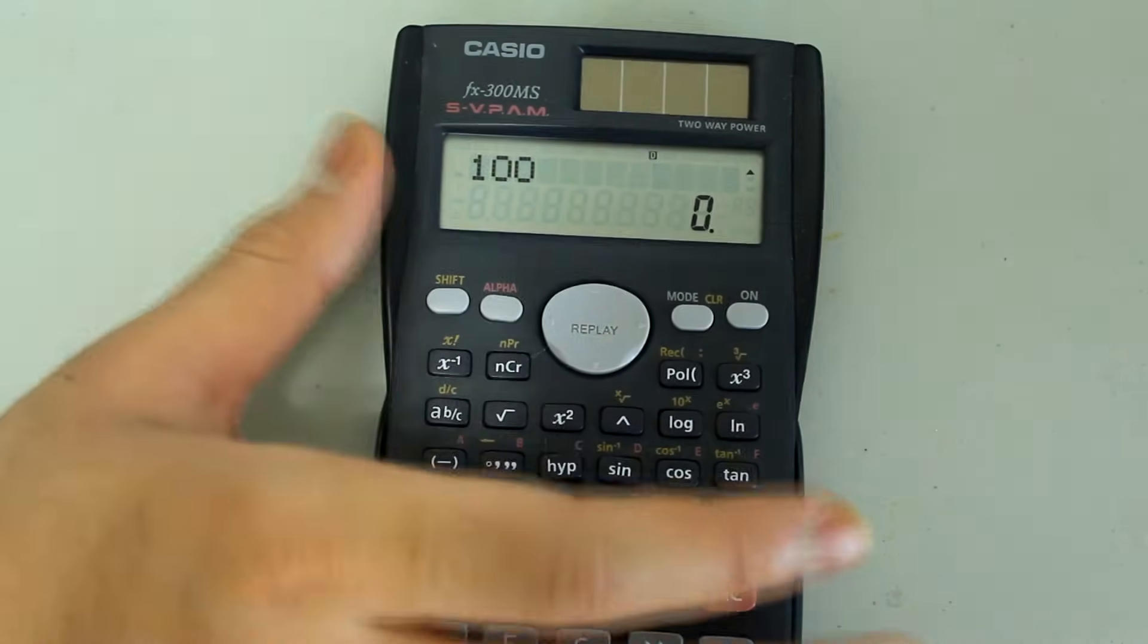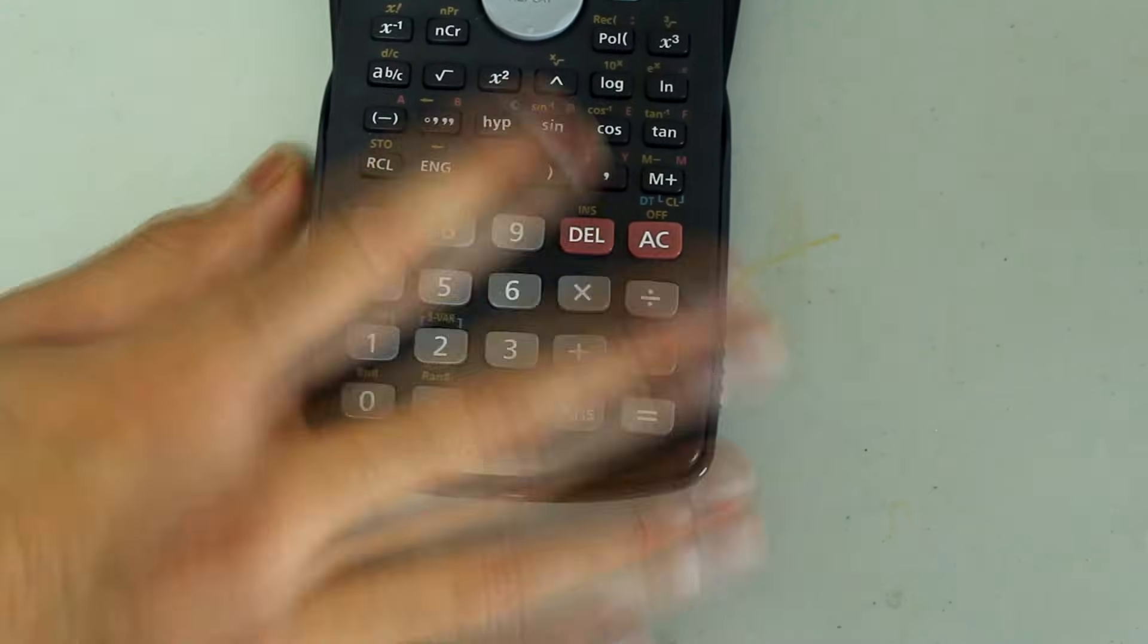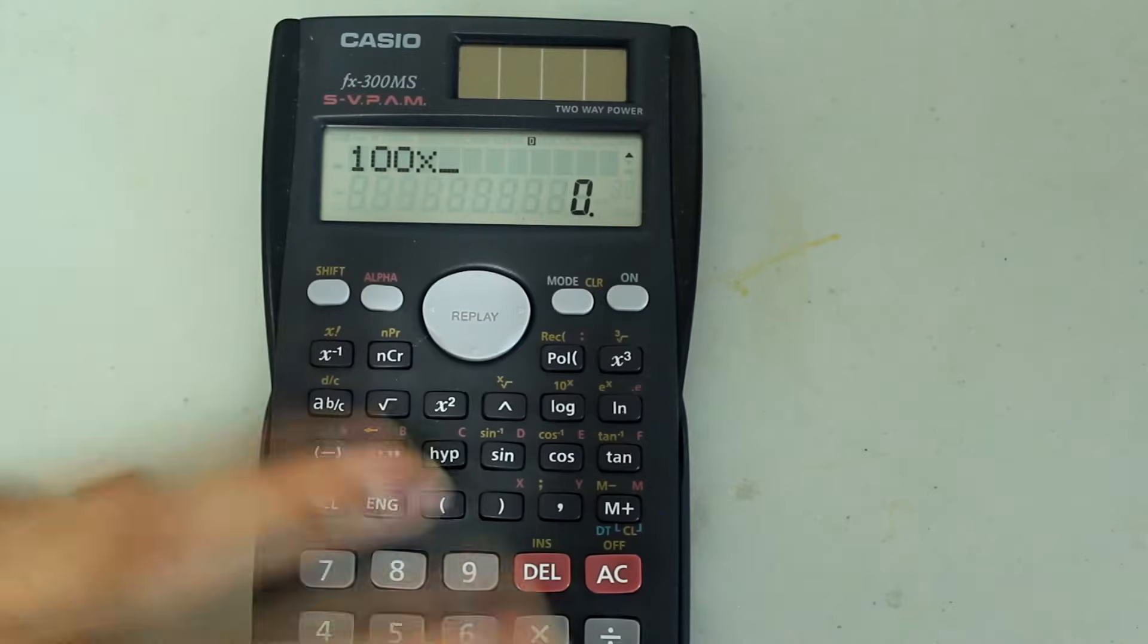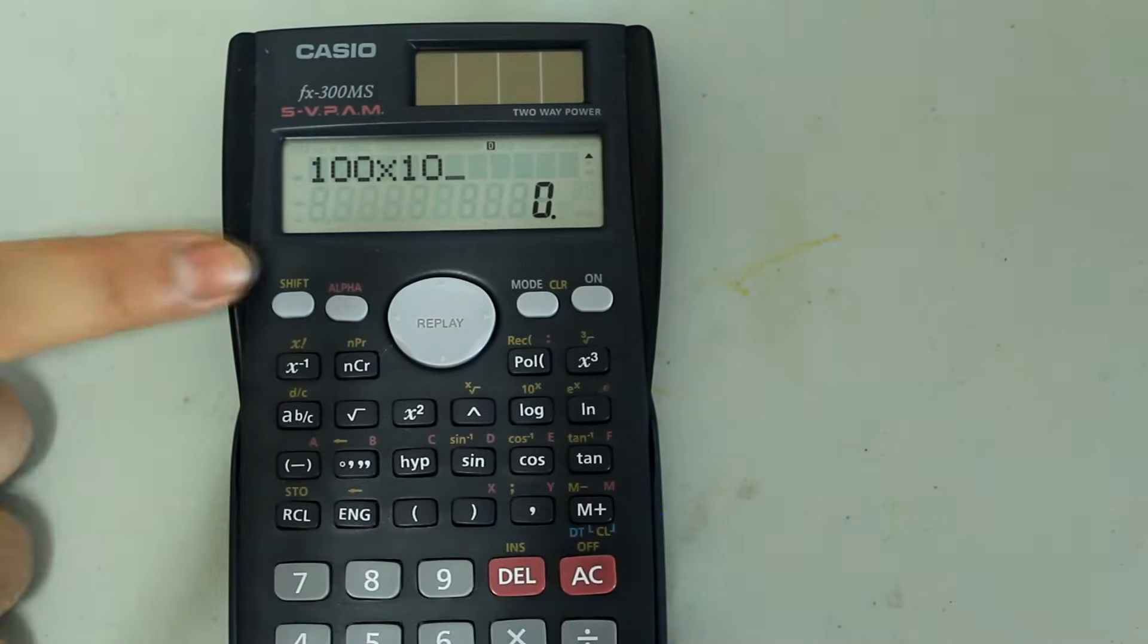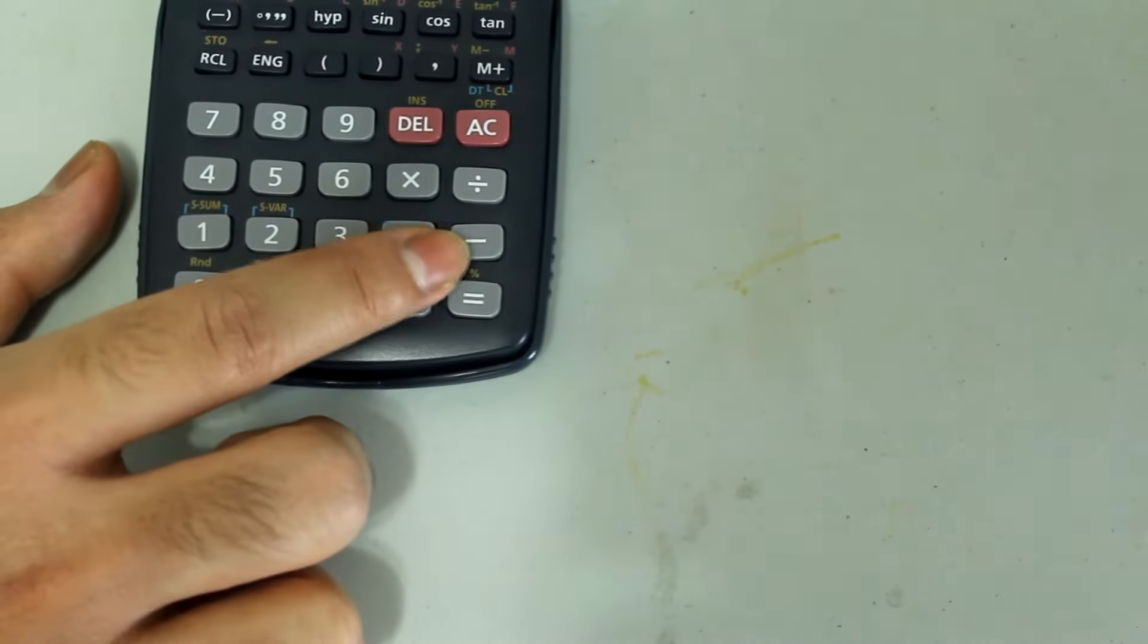Then press the multiplication symbol. Afterwards, type in 10 on the number pad, so it looks like this so far. Then I'm going to press Shift and the equals sign to choose percent.